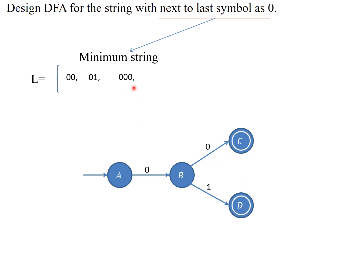Look at another possible string: three zeros. This is also a valid string according to this problem statement. There are already two zeros: A to B, B to C. But there is one more zero — on state C there is no transition. To handle any number of zeros, you have to create a self-loop transition on C on zero. This is also accepted.